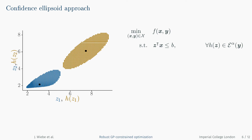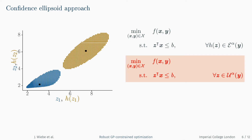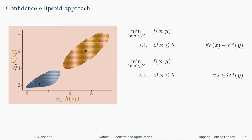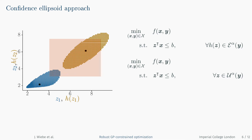The flexibility of the warped Gaussian process is great, but the downside is that there is no simple chance constraint reformulation anymore. Instead, we have developed an approximation to the chance constraint using robust optimization. We use the Gaussian process to construct a confidence ellipsoid in the latent space, which contains the true values of the black box function with high probability. We then construct a robust optimization problem that requires the uncertain constraint to hold for all parameter values which, when warped into the latent space, are within this confidence ellipsoid. This can also be represented by taking the warping function into the uncertainty set, constructing a warped uncertainty set, with the ellipsoidal set shown in the top right and the warped set in the bottom left.